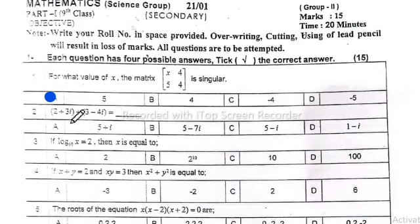Number 2: (2 + 3i) + (3 - 4i). Adding these: 2 plus 3 equals 5, and 3i minus 4i equals minus i. So the answer is 5 minus i. Option C is correct.